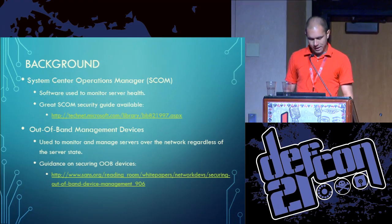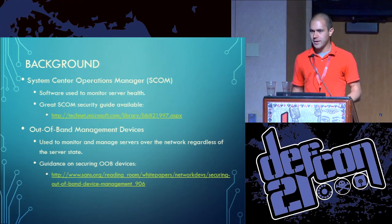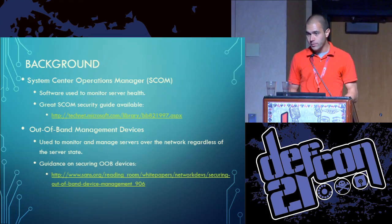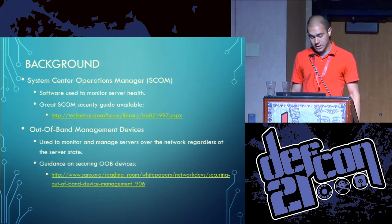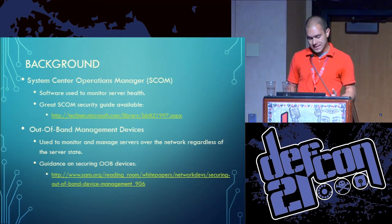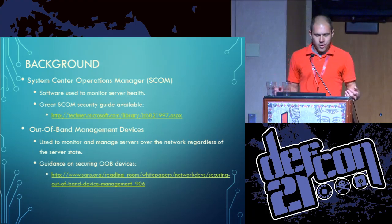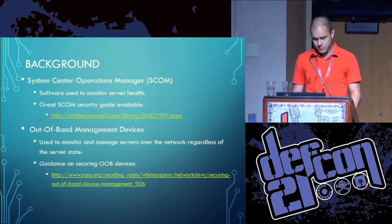For background, we're going to go over SCOM, which is used for monitoring. If it's a high-value asset you want to monitor it, so you're going to use some sort of monitoring tool — in this instance SCOM. There's a SCOM security guide available on the Internet; it's really long and nobody probably read it — they probably just hit next, next, next. There are also out-of-band management devices — network devices that allow out-of-band management so if the machine is off you can restart it. It's used for imaging, et cetera. We're going to look at HP iLO in this instance.